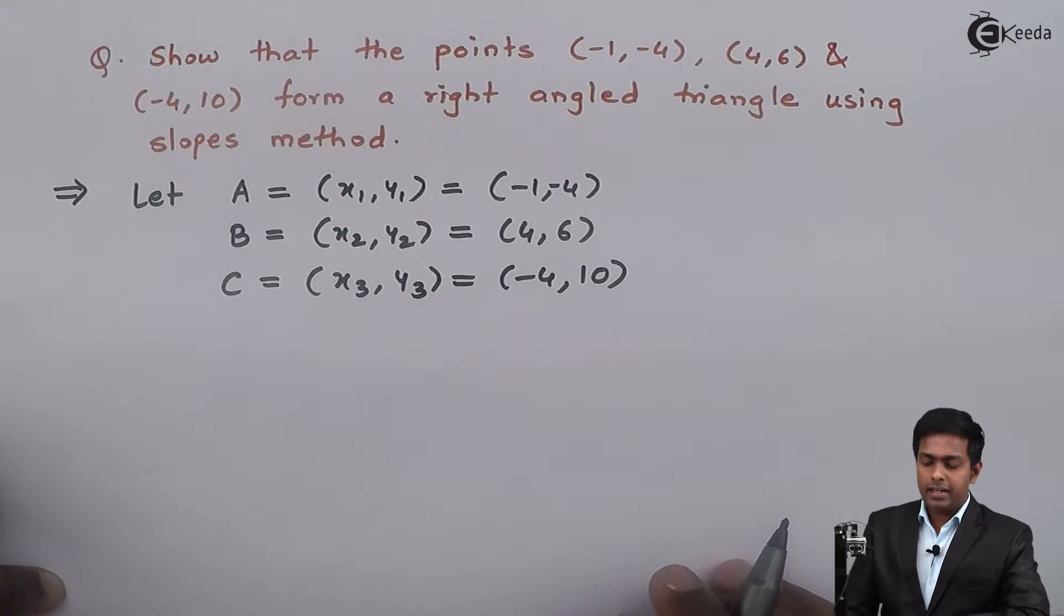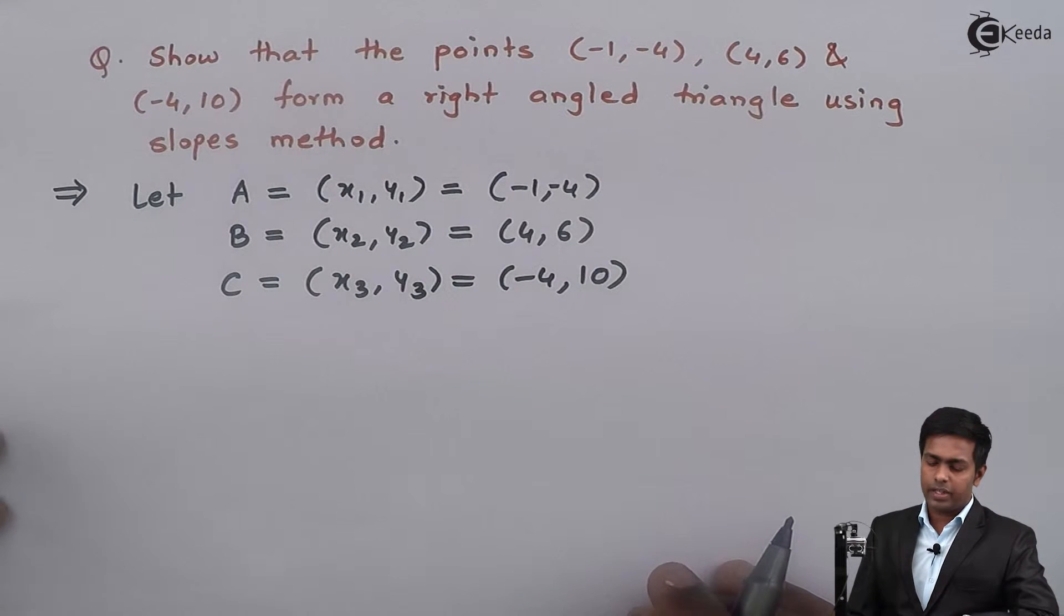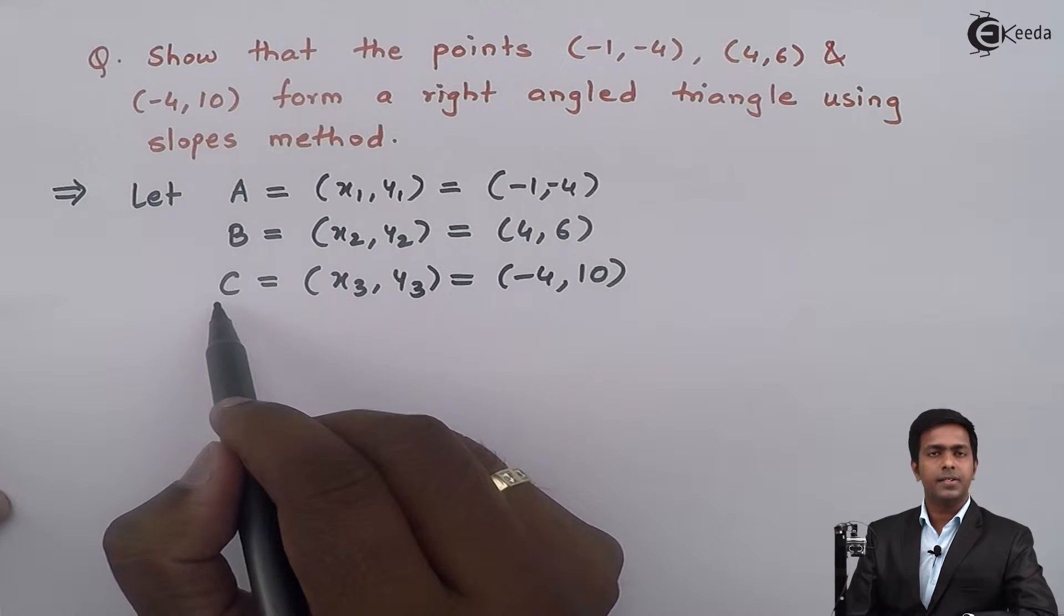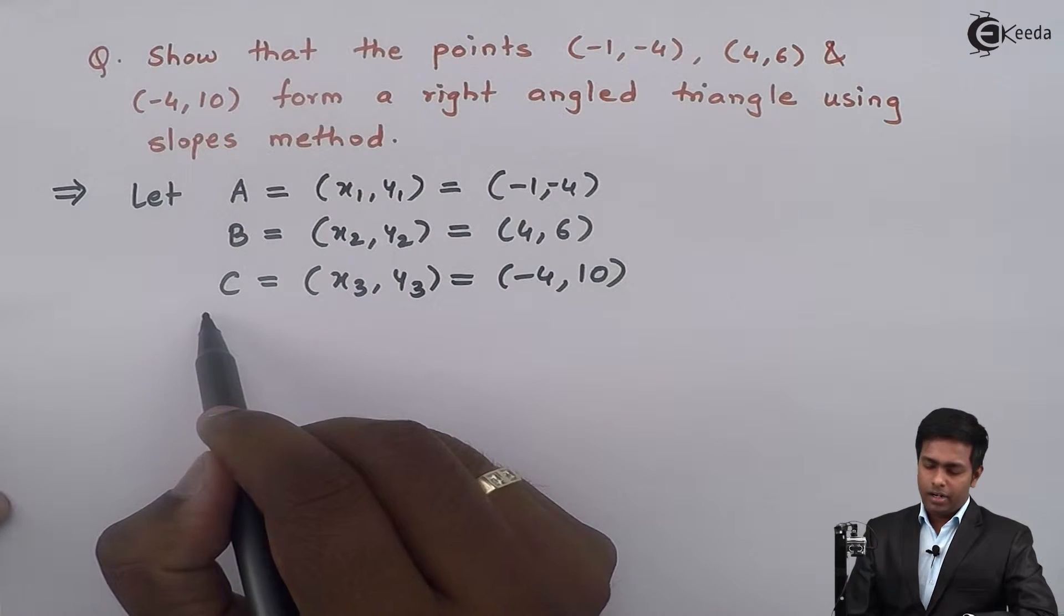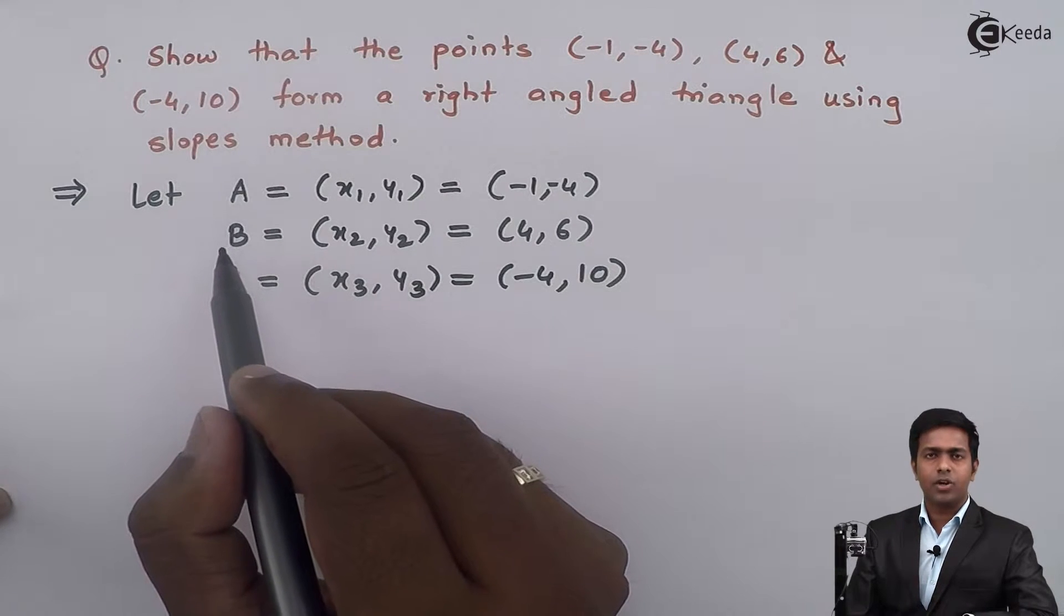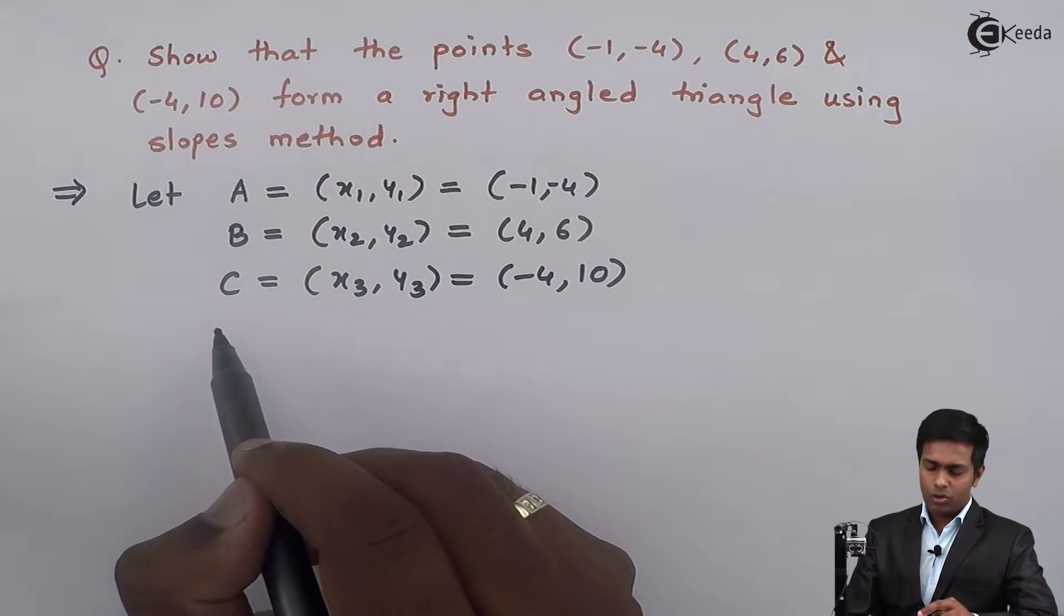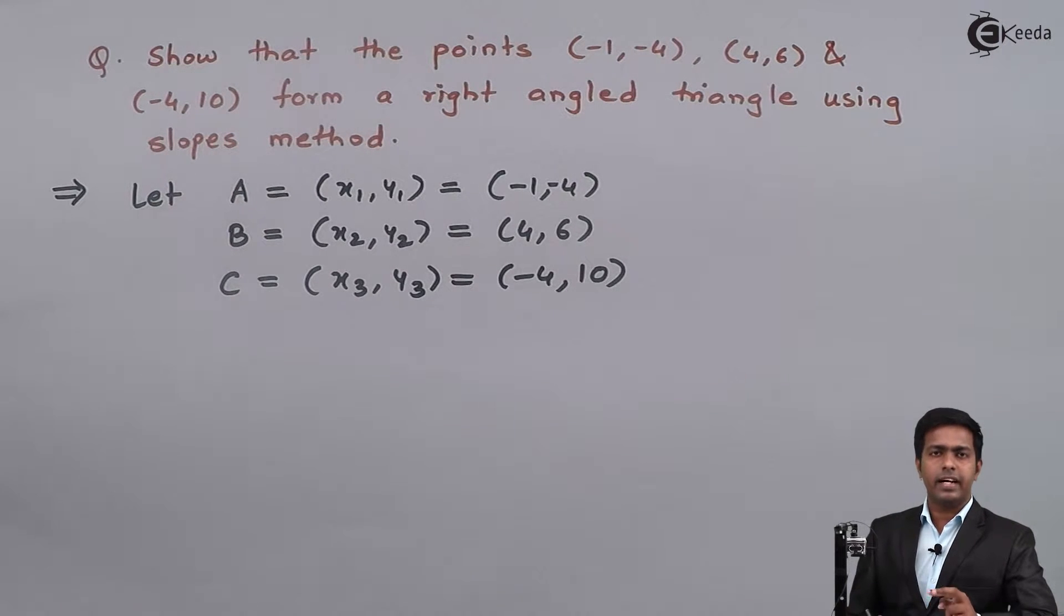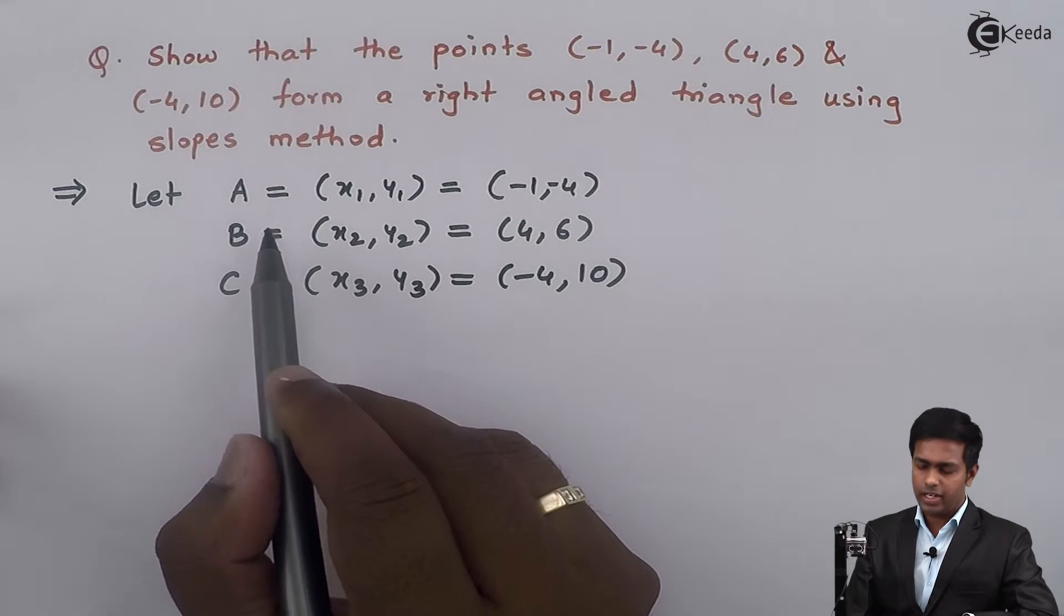To prove that they form a right angle triangle, we have to find the slopes of lines AB, BC, and AC. If we get that the multiplication of slopes of 2 lines equals -1, then we can say that these 2 lines are perpendicular to each other. Let us find out the slopes of the 3 lines.